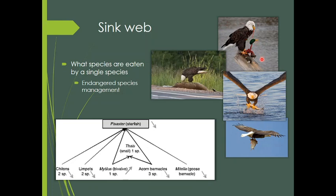To manage bald eagle populations — which was particularly important in the 1950s through 1980s, though populations are now recovering — we need to understand and manage their food sources too. Another example is Robert Paine's work on keystone species, where a starfish at the center of a sink web eats barnacles, mollusks, snails, bivalves, and other species in the rocky intertidal zone. The sink web of energy going into that starfish can moderate the entire rocky intertidal system.